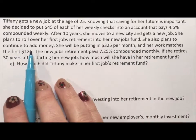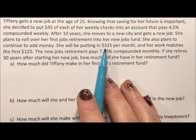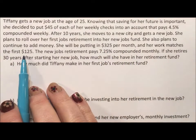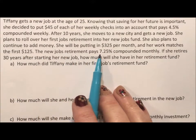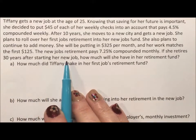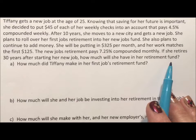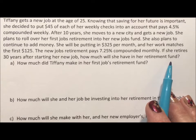She also plans to continue to add money, good plan. She will be putting in $325 per month and her work matches the first $125, awesome. The new job retirement pays 7.25% compounded monthly. If she retires 30 years after starting her new job, how much will she have in her retirement fund? I like this question because it's pretty realistic - you switch jobs and when you switch jobs you roll over your annuity, that's how it works, you roll over your retirement.